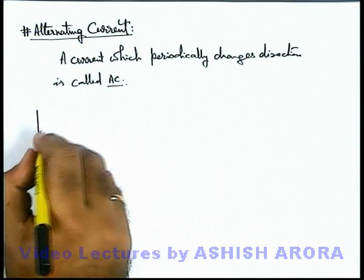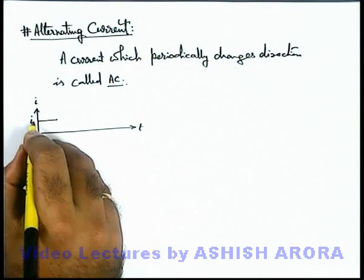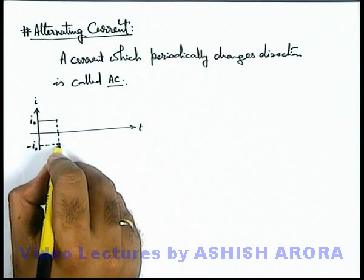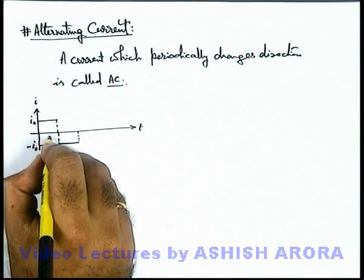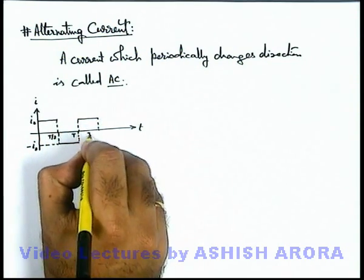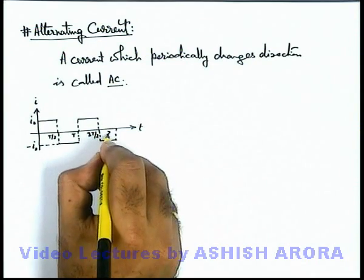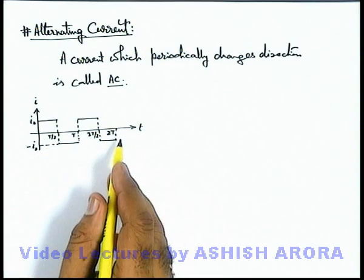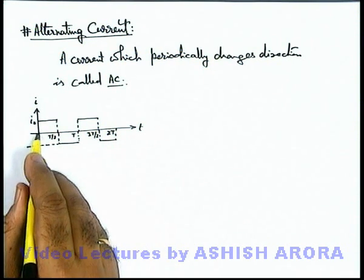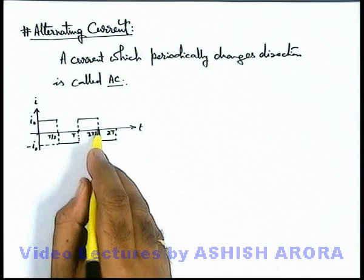A simple time function of current can be defined as follows: say a current flows at a constant value i₀ up to a time t/2, and then it reverses to a value minus i₀ and continues for the same time t/2, up to time t. Then again for a time t/2, up to 3t/2, it is constant at i₀, and then constant at minus i₀ up to time 2t, and so on. In one cycle from 0 to t, the current changes its direction, and from t to 2t the current again changes direction after each half cycle.